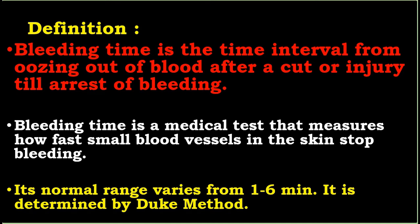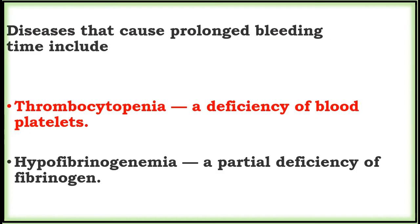The normal range of bleeding time varies from 1 to 6 minutes. It is determined by two methods. Bleeding time measures the platelet function. Diseases that cause prolonged bleeding time include platelet-related diseases.